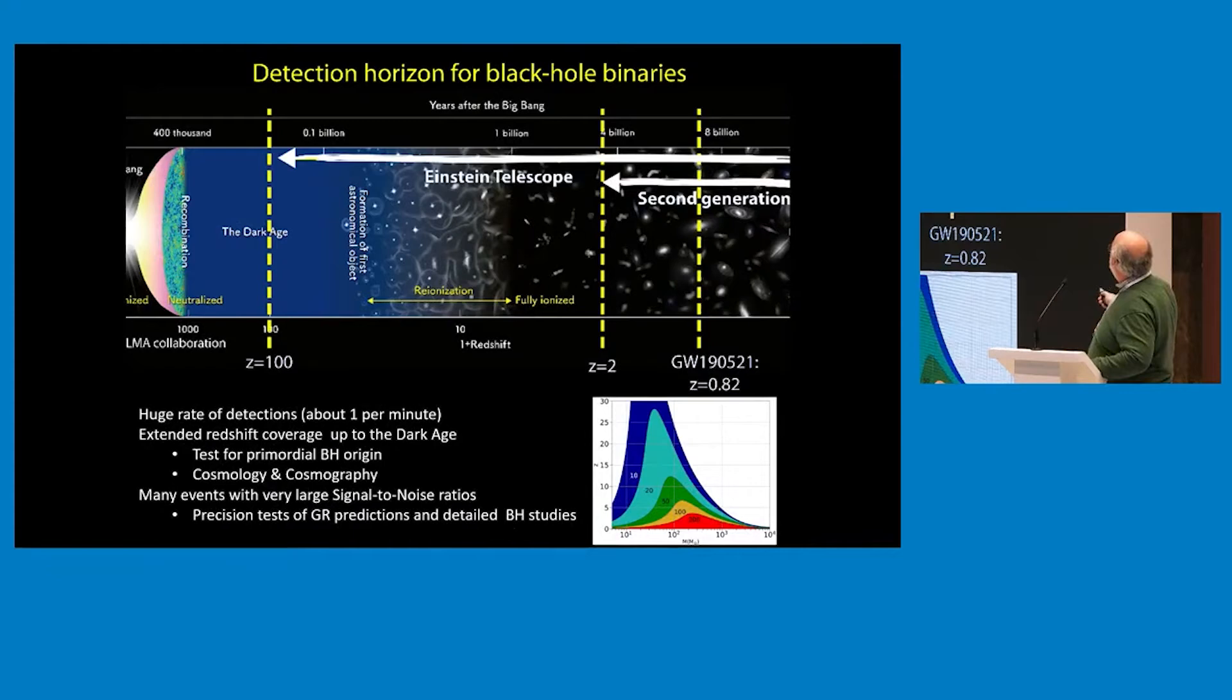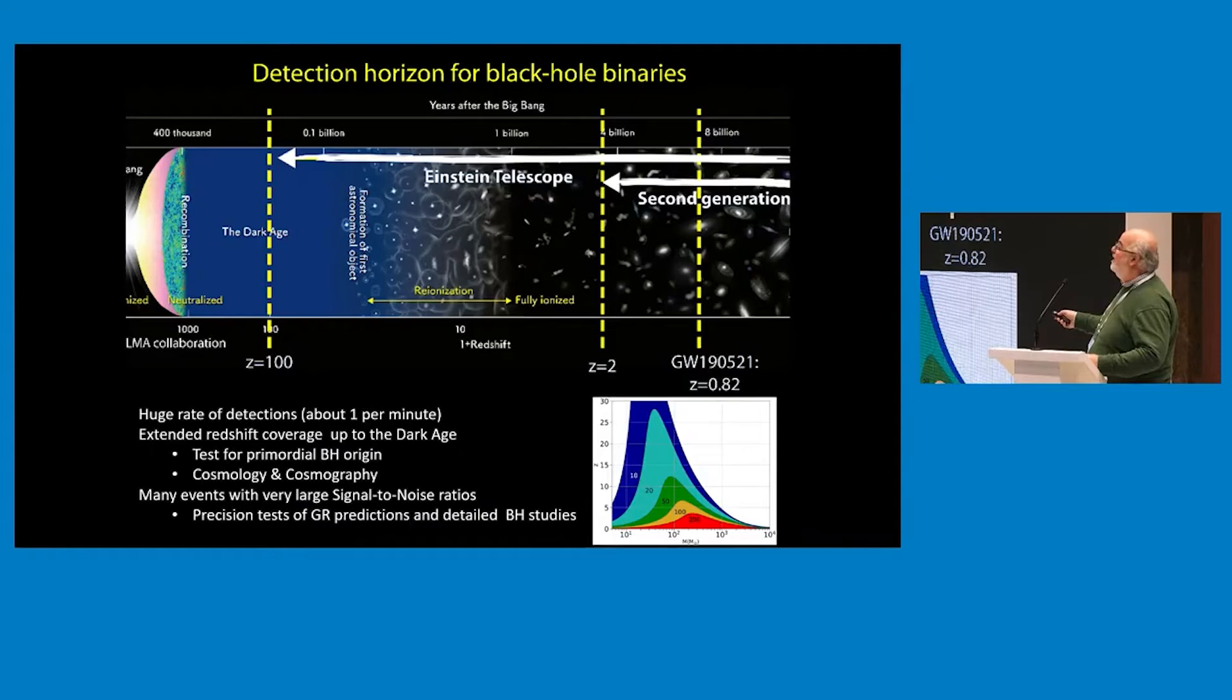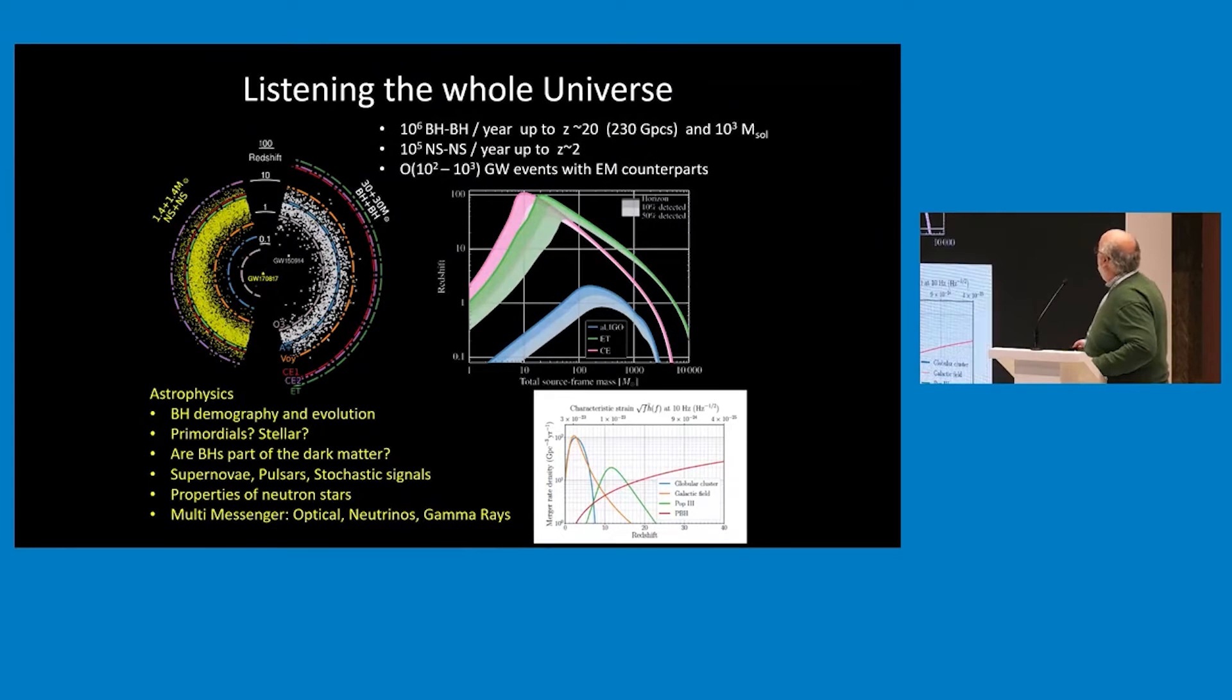The important thing that sensitivity is translated into volume. The second generation stops at redshift about two. With Einstein telescope, you go all the way to the dark age where there are no stars, so you start finding mergings of black holes that are primordial, coming from fluctuations in the early universe, vacuum fluctuations, that will grow into becoming a black hole. You can test primordial black holes, you can do cosmology all the way back to very early universe, and you can do very precise tests for general relativity because you are going to have very nice events, very clean.